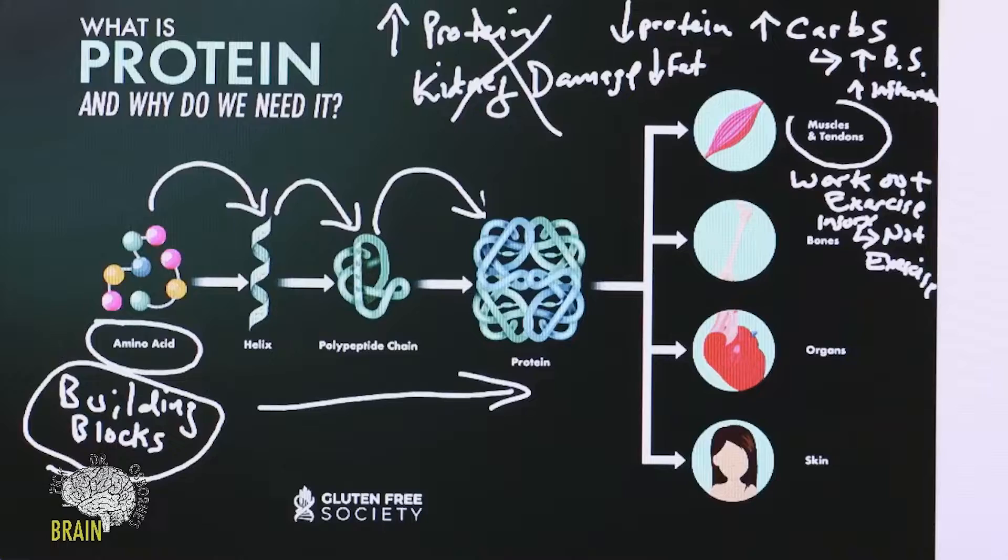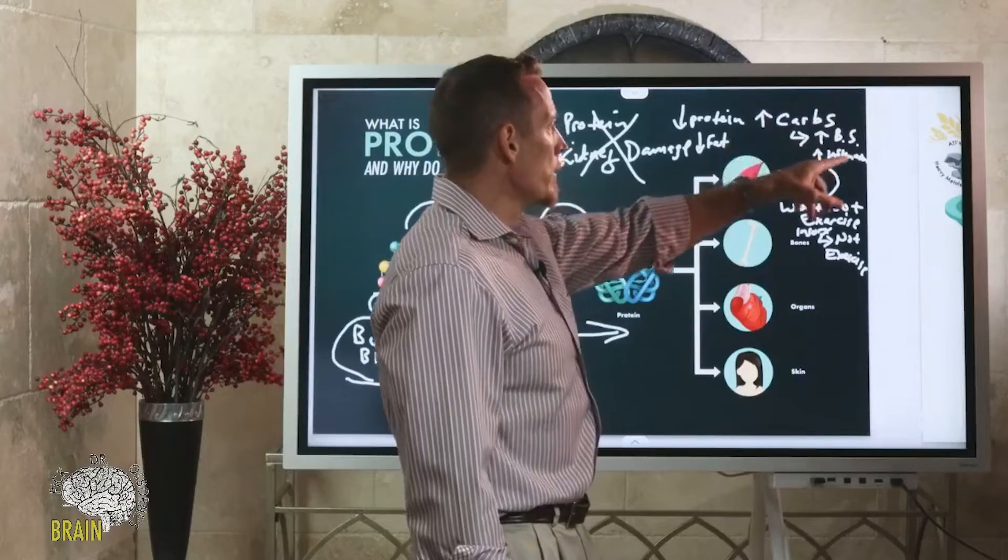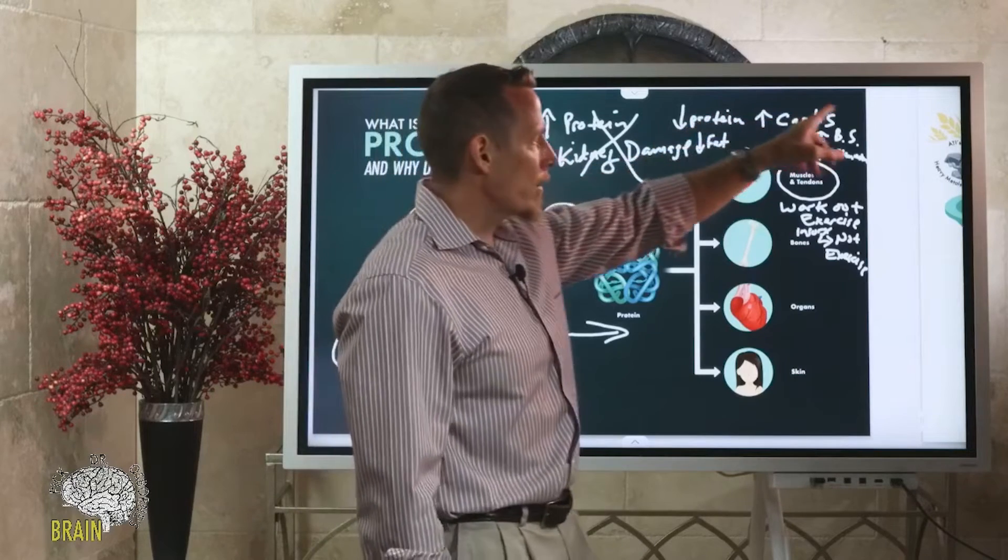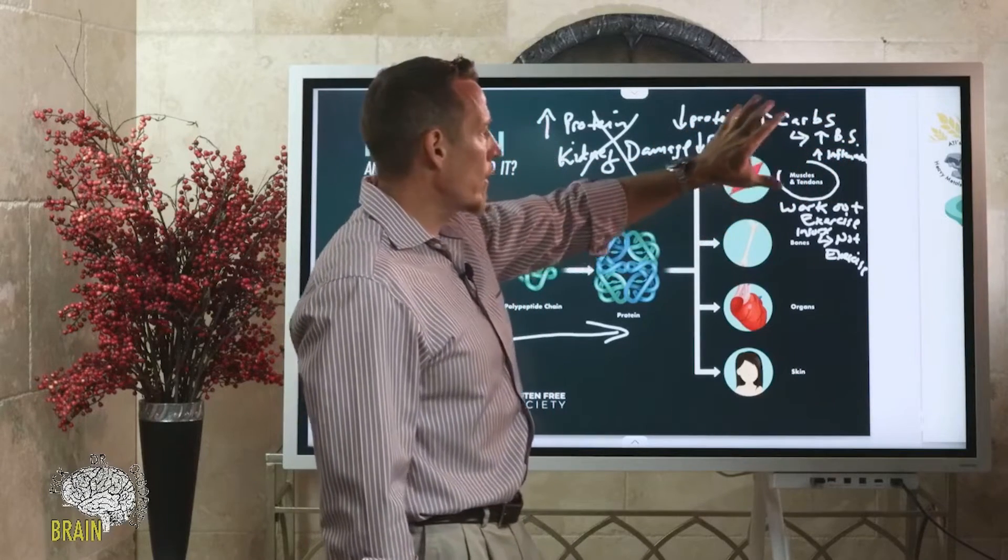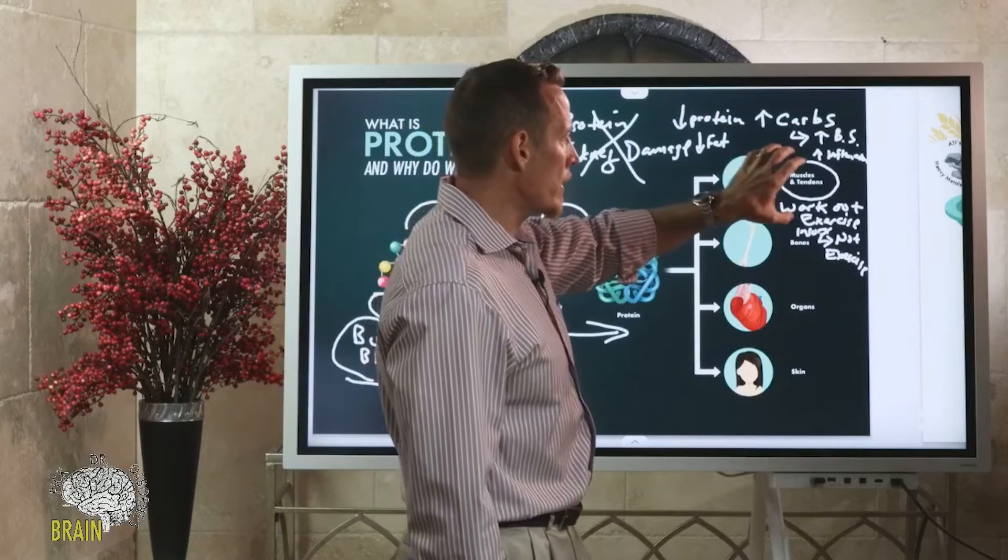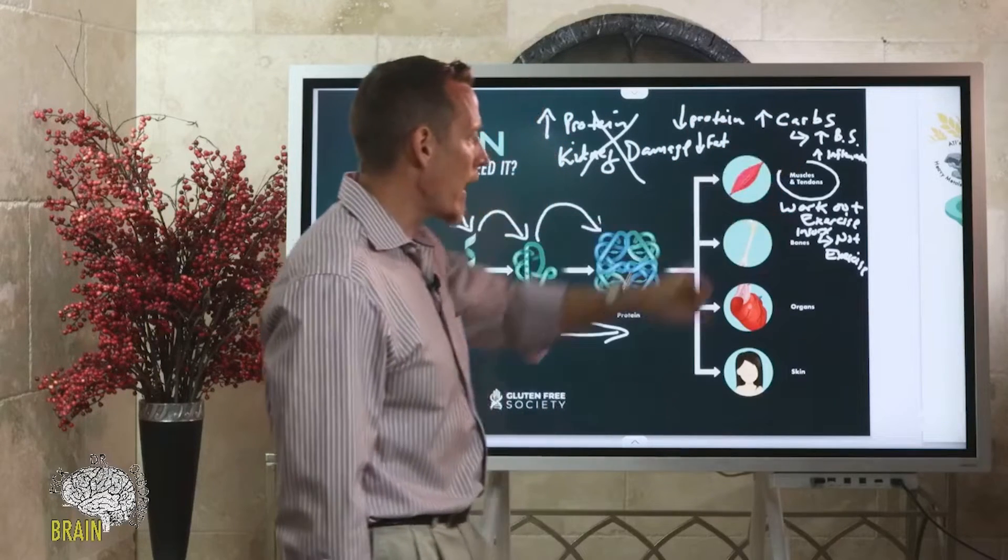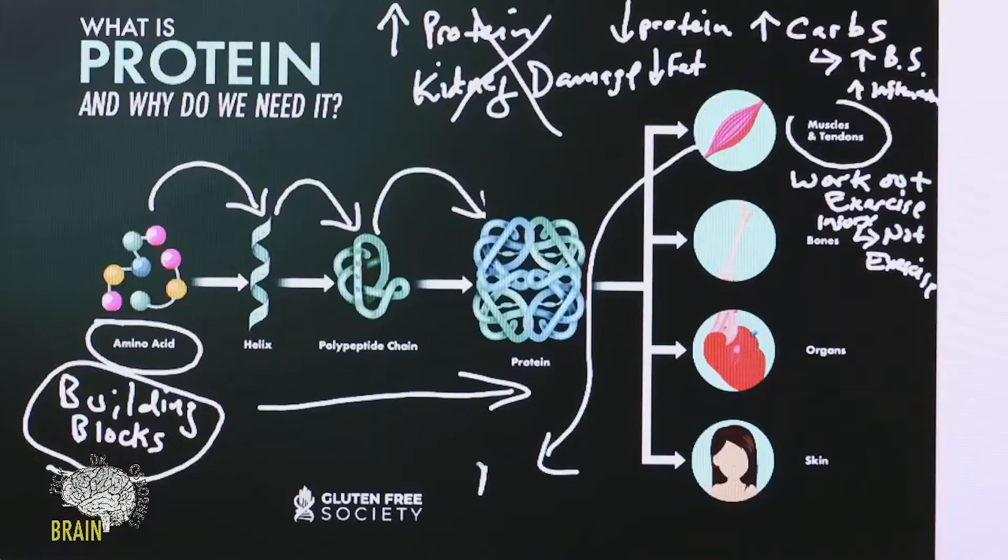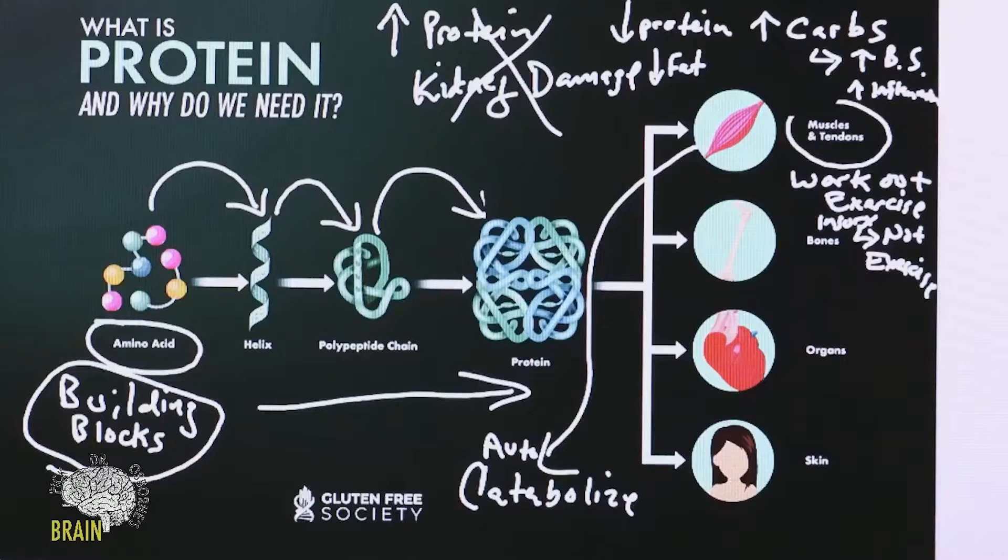Some would argue that not all carbs are created equally, and I agree with that. But when most people switch to this type of low protein, high carbohydrate diet, regardless of the quality of carbohydrate, if your protein needs aren't being met, your muscles and tendons won't repair, and your body will start to auto-catabolize. It will start to catabolize - that means break down.